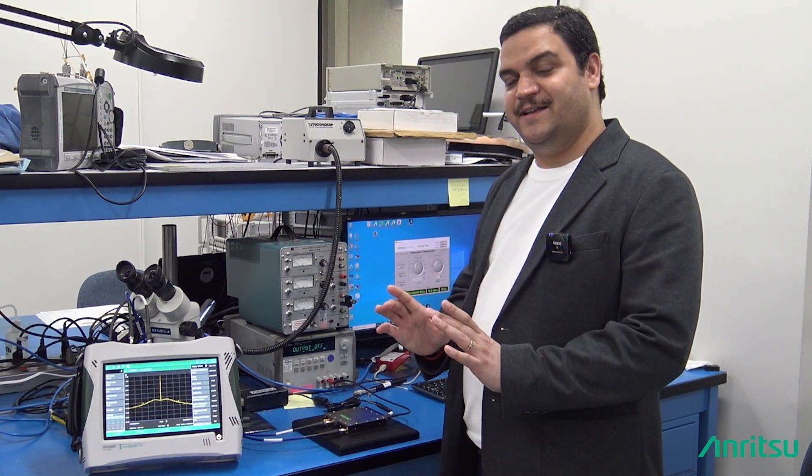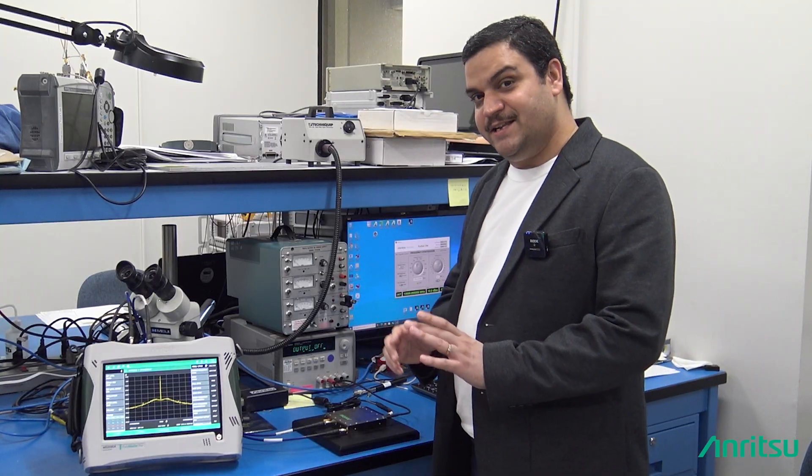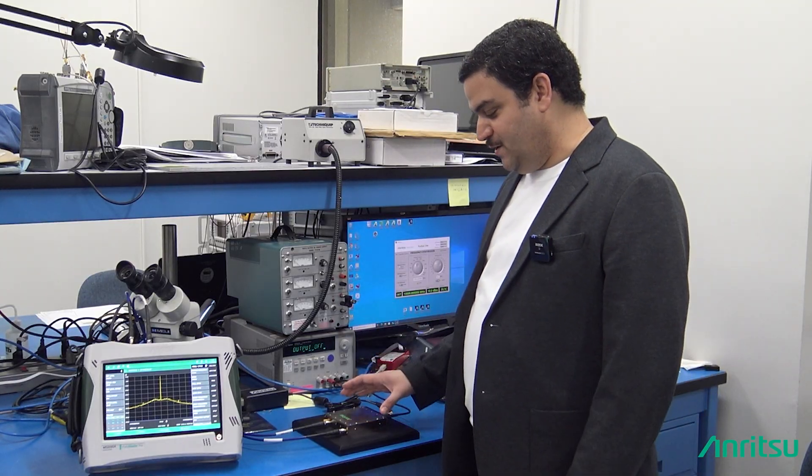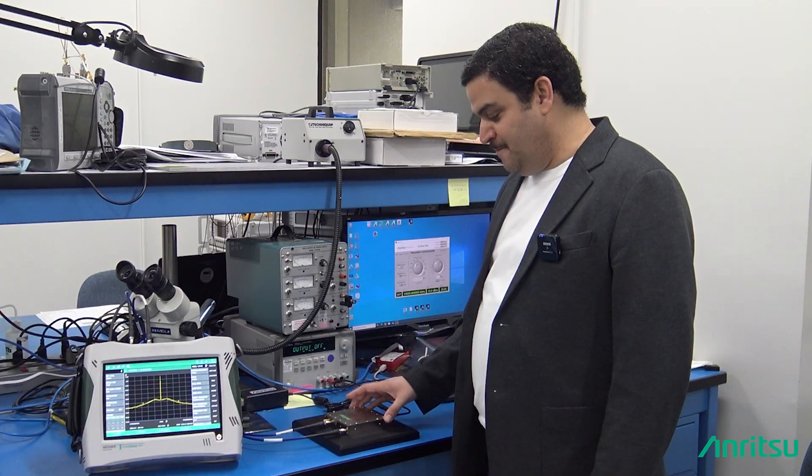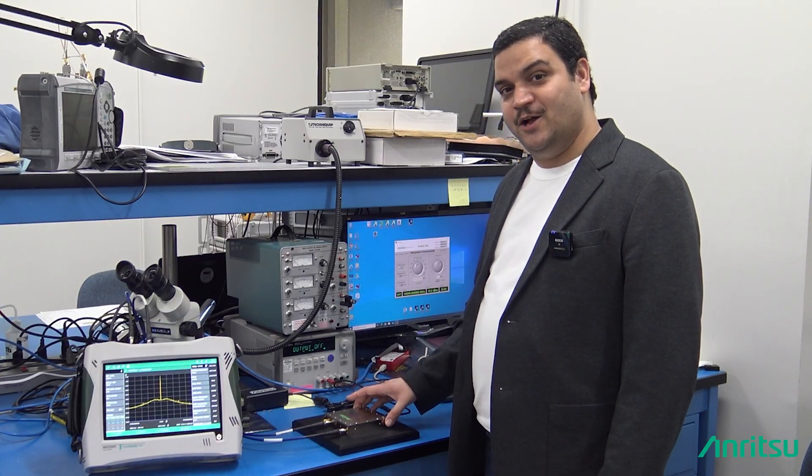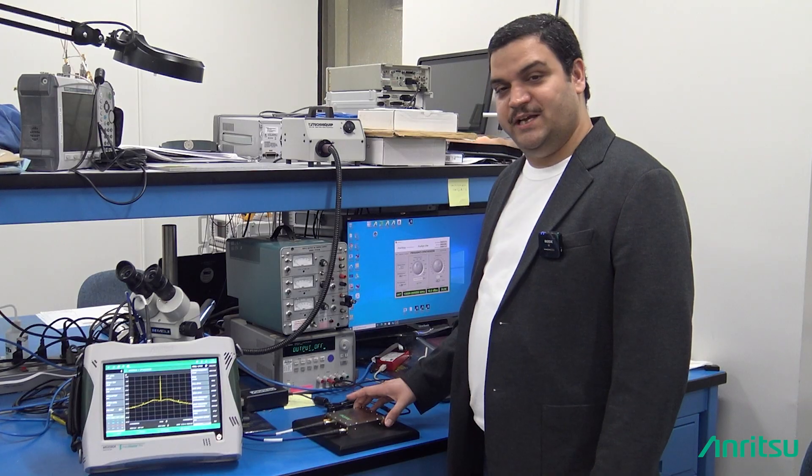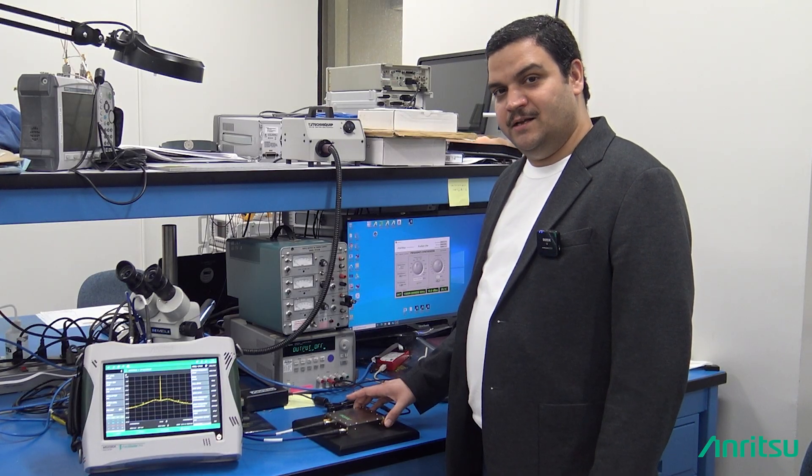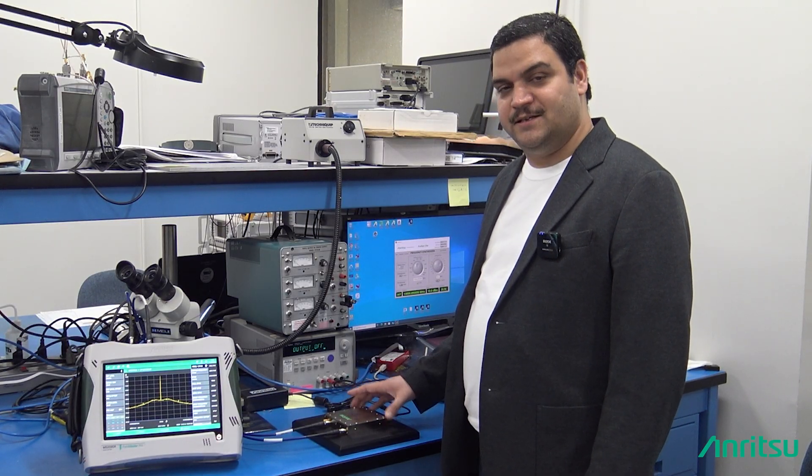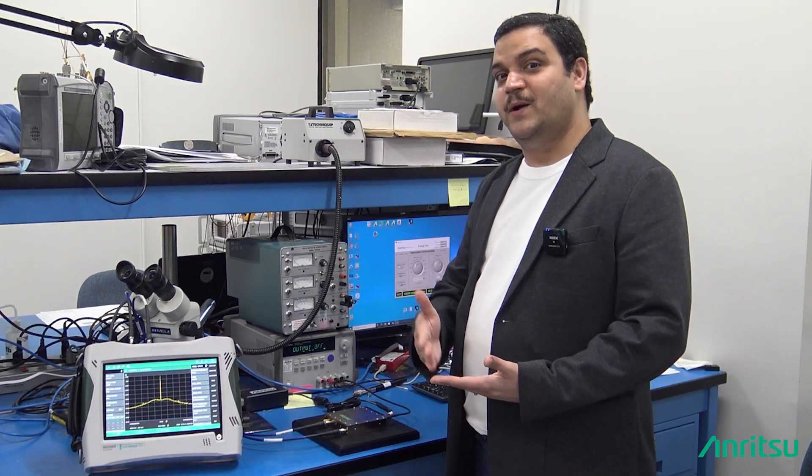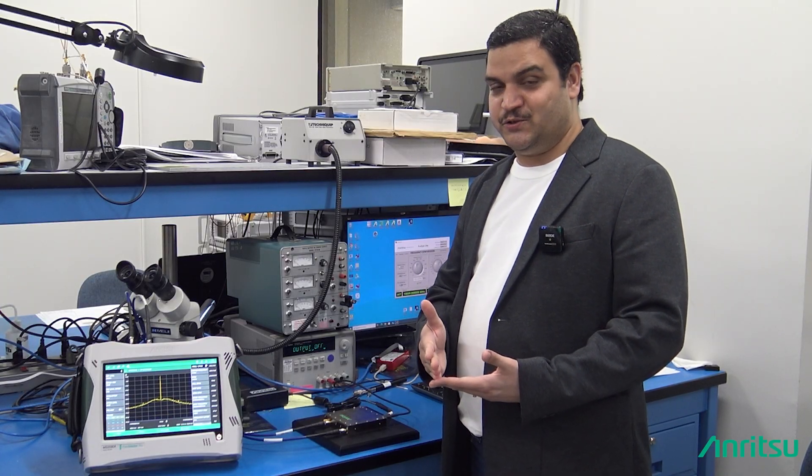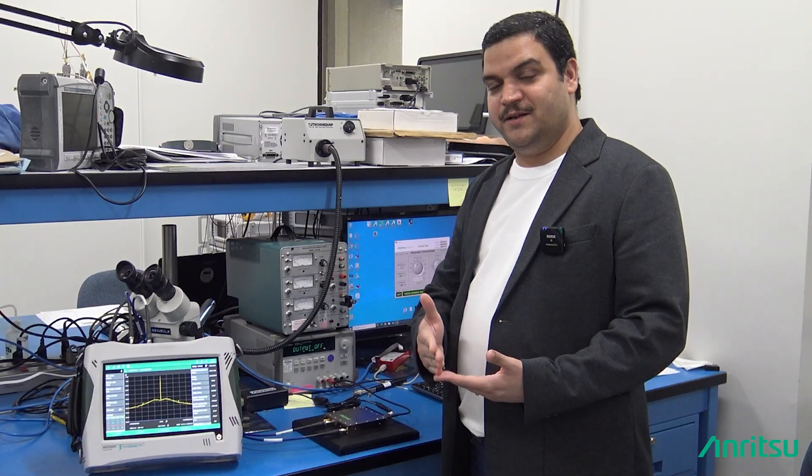We're miniaturizing the designs that we have. The latest addition in the family is what you can see here on our desk. This product is called Echosyn light, model number MG36021A. This is a very small form factor, 10 megahertz to 20 gigahertz synthesizer. It can be pushed to 21 gigahertz, but the guaranteed specifications are up to 20 gigahertz.